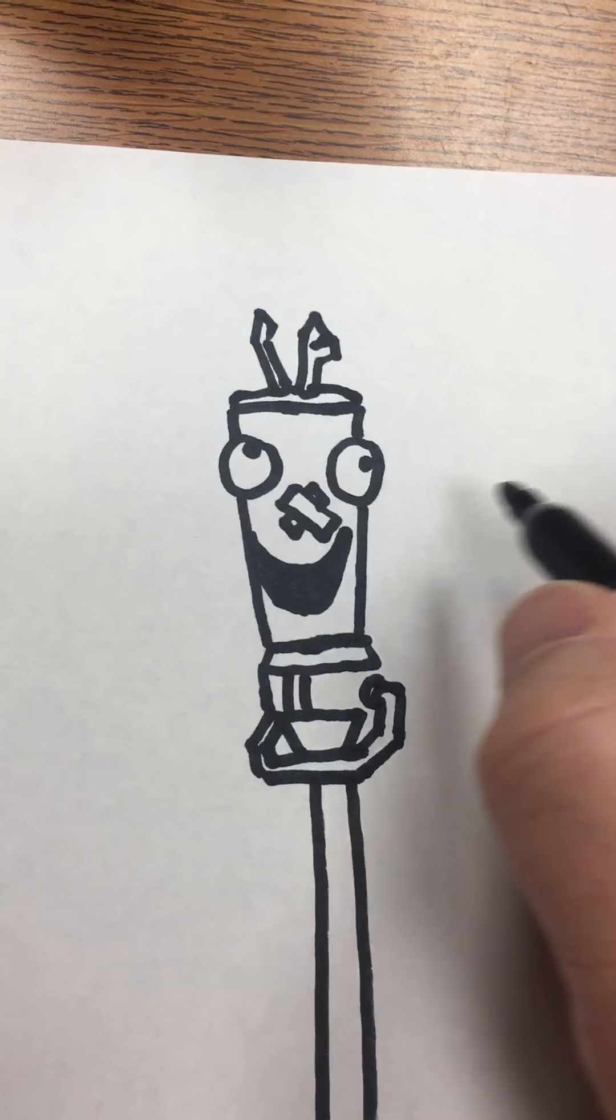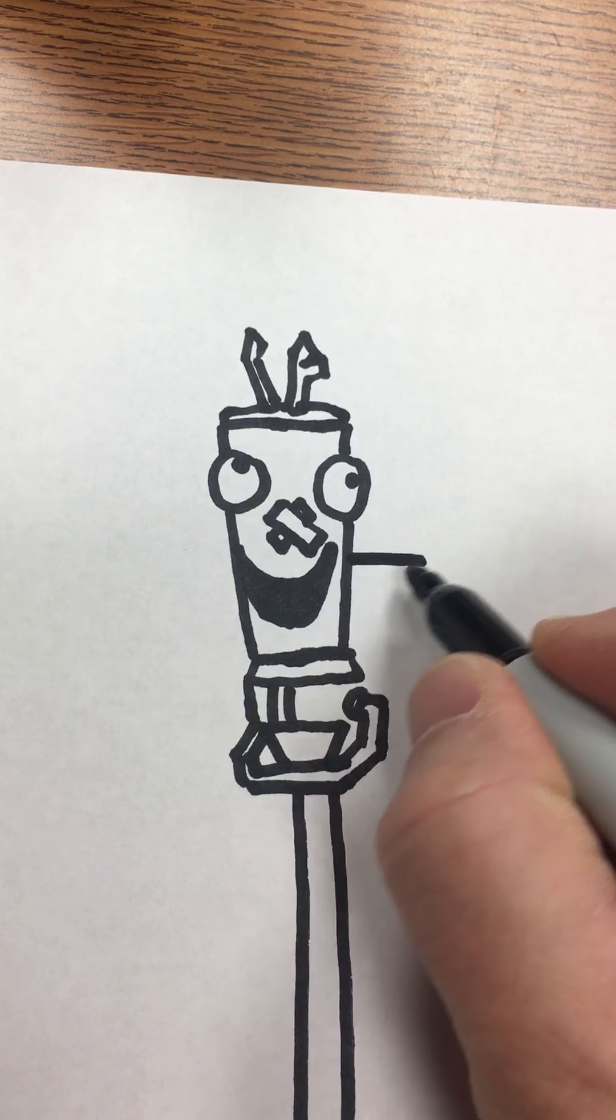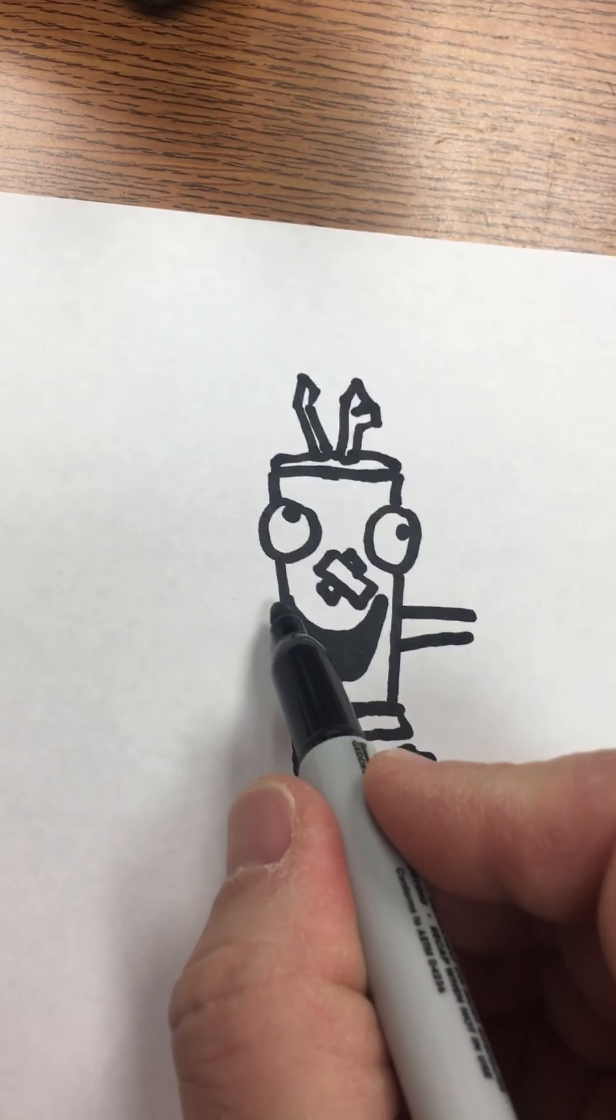And we need to add his little arms with his boxing gloves. Arms go out. Put the same on each side.